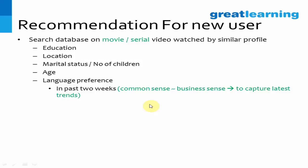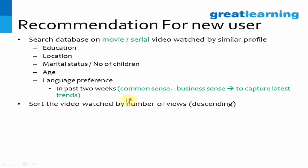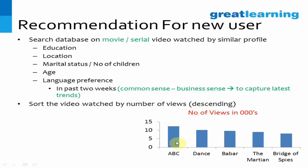We use just the past two weeks because we want to capture the latest trend. For news clips especially, there can be a hot topic that most people are watching. Based on this past two-week trend, you find what people similar to this new user have watched, sort those videos by number of views, and select the top 10 to present to the user with an option to view more.